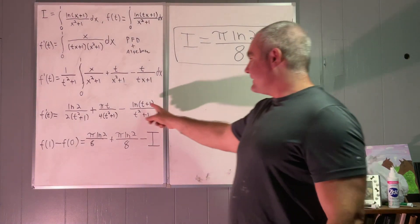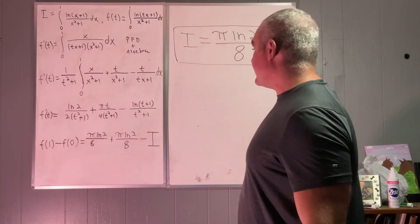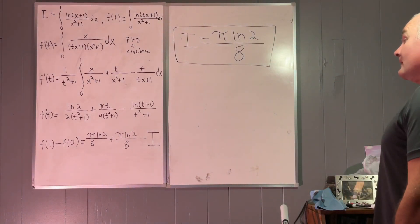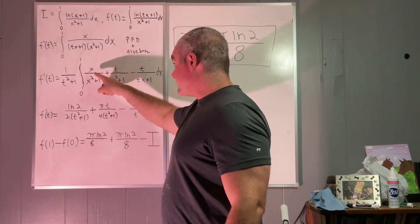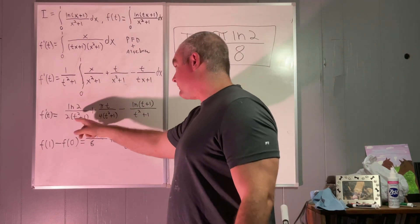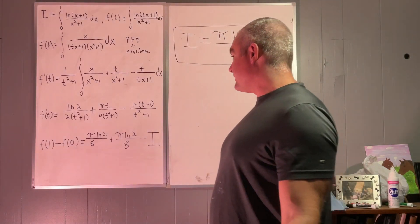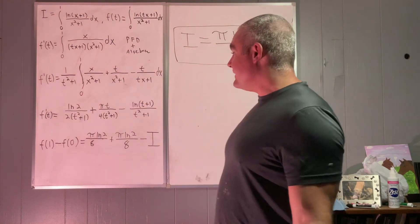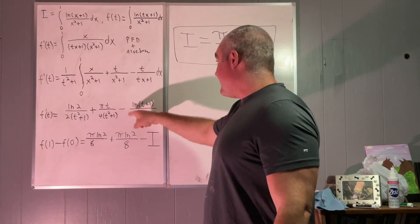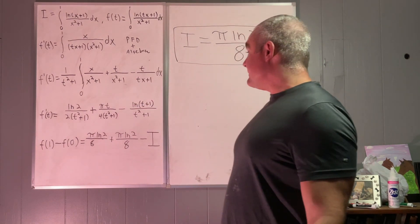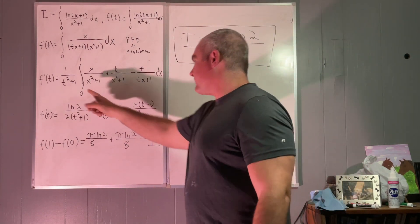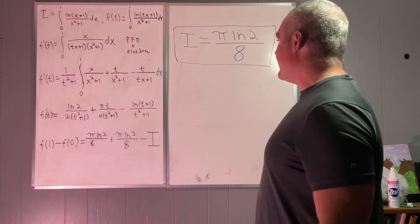After evaluating, you arrive at this result. Evaluating the first term and multiplying by 1 over t squared plus 1 gives natural log of 2 over 2(t squared plus 1). The second gives pi·t over 4(t squared plus 1), and then minus the natural log of t plus 1 over t squared plus 1. All those t squared plus 1 factors come from that common denominator.